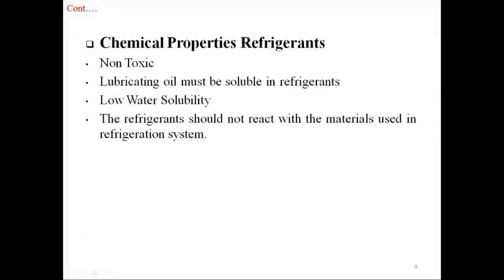Chemical properties of refrigerants. Refrigerant should be non-toxic. Refrigerant used should be soluble in lubricating oil. If the oil is not miscible in the refrigerant and it is heavier, it will settle down in the evaporator and reduce heat transfer; therefore oil separators are to be employed. Refrigerants should have low solubility in water, otherwise most refrigerants form acids or bases in the presence of water, causing corrosion and deterioration of walls, seals, and metallic parts. The refrigerants should not react with materials used in the system such as evaporator, condenser tubes, compressor, and control valves.